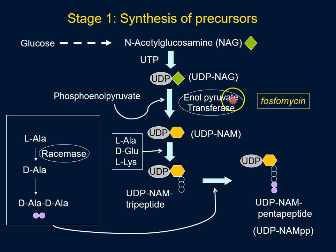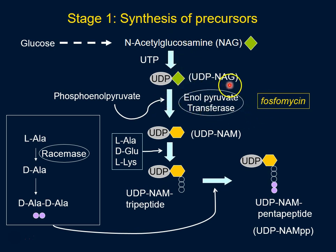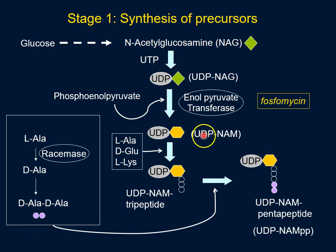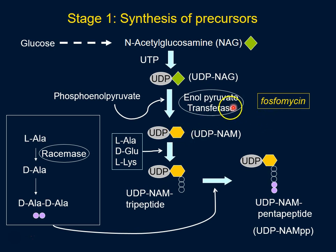Phosphomycin is an inhibitor of enolpyruvate transferase, so it inhibits the conversion of UDP-NAG to UDP-NAM. Now the bacteria has only one sugar — it doesn't have the other sugar necessary to put the cell wall together — so it will shut down cell wall synthesis at that stage.